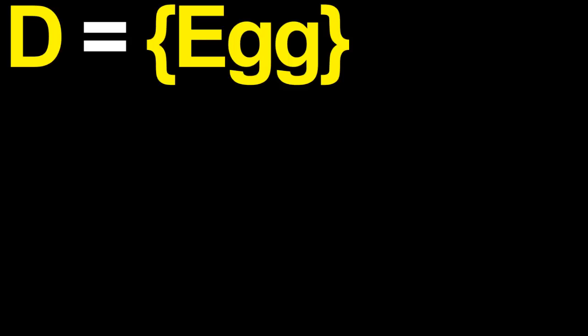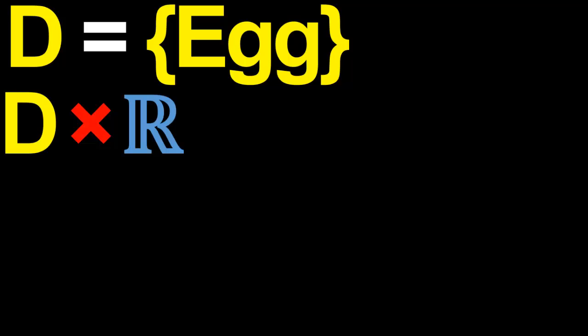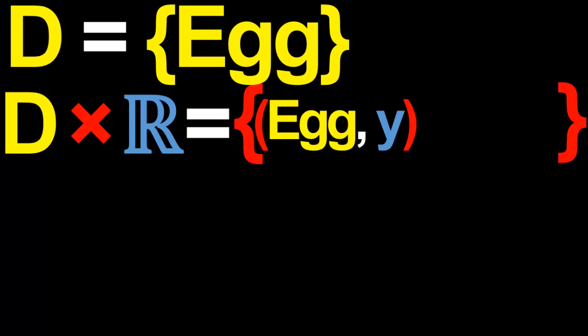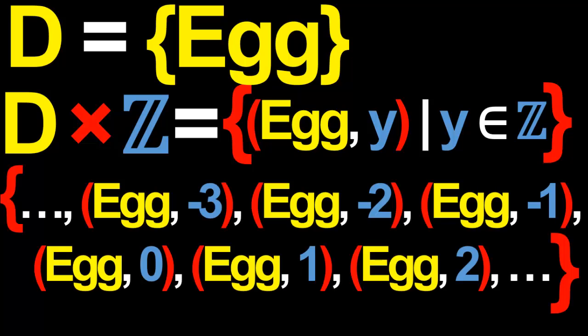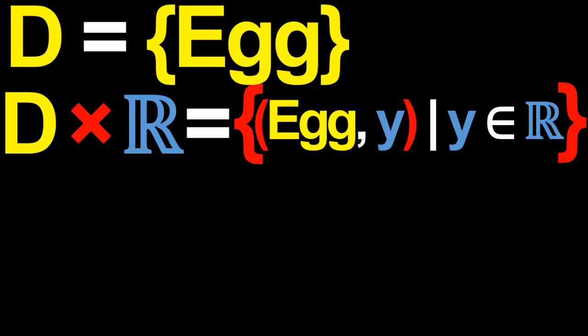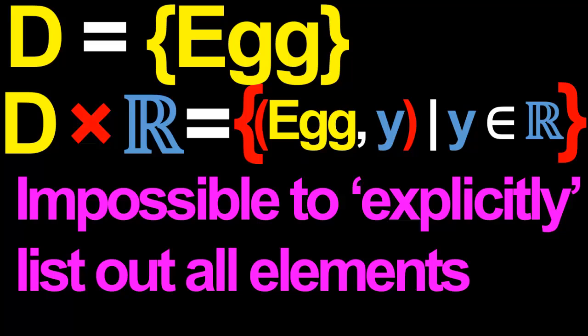One more example. Suppose again that the set D consists of the single element egg. Then the Cartesian product of D with the set of all real numbers is just the set of all ordered pairs (egg, y) where y is a real number. Note that with this Cartesian product, there is no way to explicitly list out all the elements — even with the aid of the ellipsis notation. This is because there is no logical way to list out all the elements in the set of real numbers.